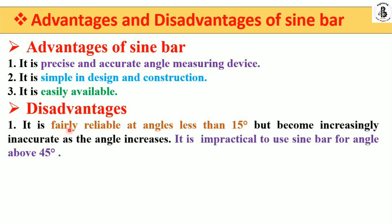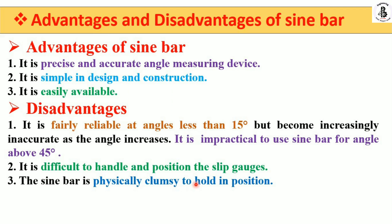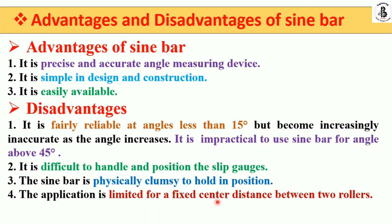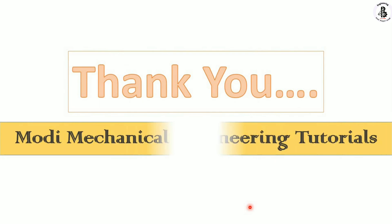Disadvantages of the sine bar: it is fairly reliable at angles less than 15 degrees but becomes increasingly inaccurate as the angle increases; it is impractical to use for angles above 45 degrees; it is difficult to handle and position the slip gauges; the sine bar is physically clumsy to hold; its application is limited by the fixed center distance between two rollers; and slight errors cause large angular errors. Thank you for watching — please subscribe and share Modi Mechanical Engineering Tutorials.